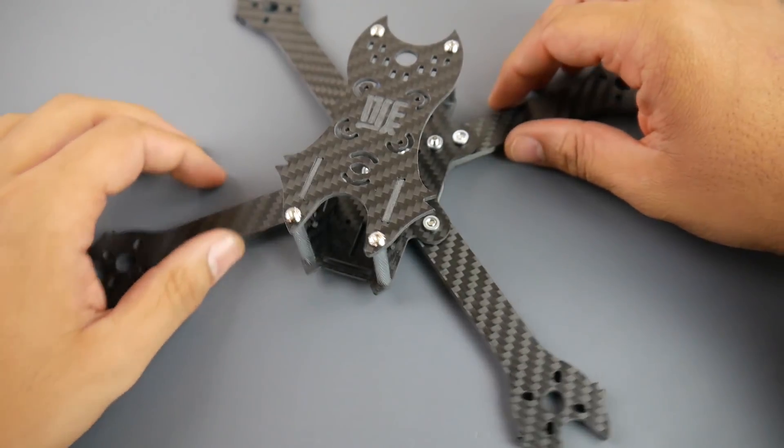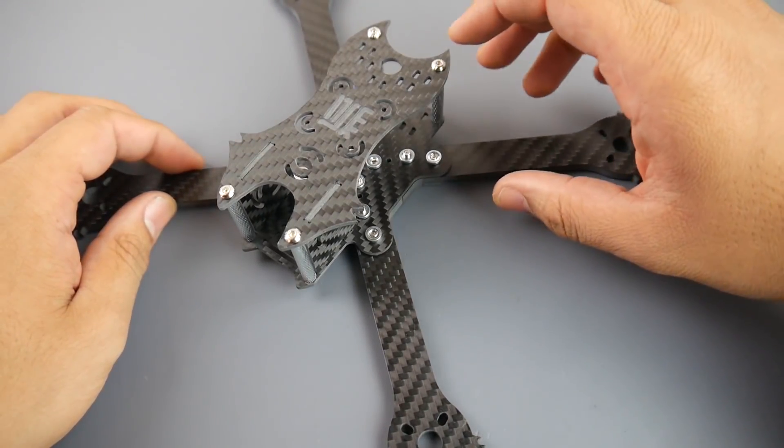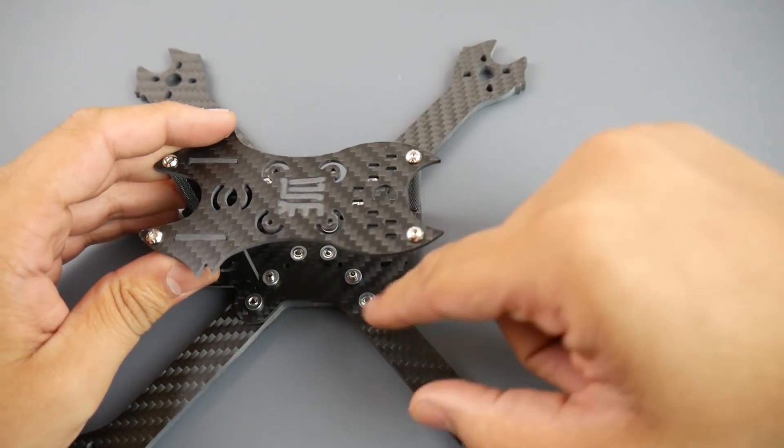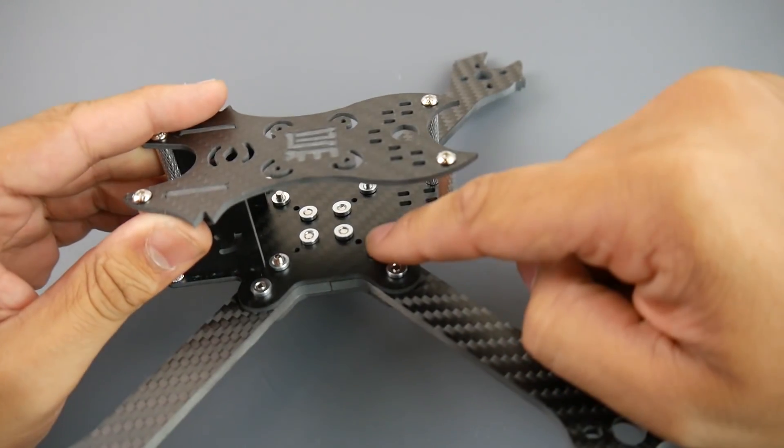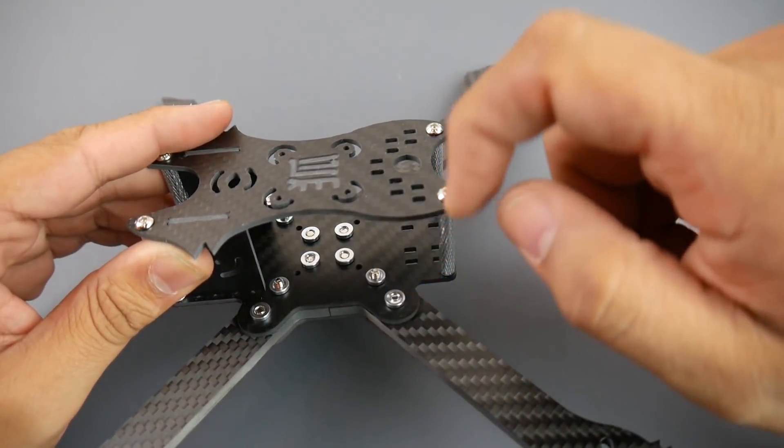This is meant for HS1177 type cameras as well as 30 by 30 stacks. You cannot use this with a 20 by 20 stack, but there is a possibility here. I don't know why these are such tiny holes here, maybe they're like M2 screws which can give you a 20 by 20 overall stack, which would be really nice.